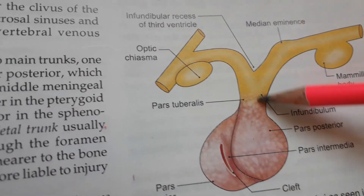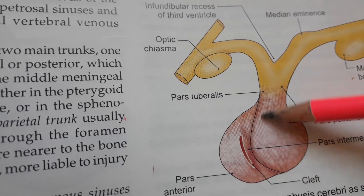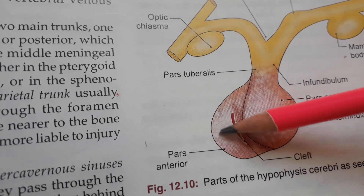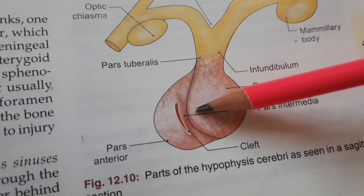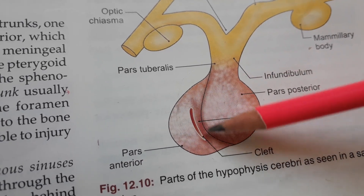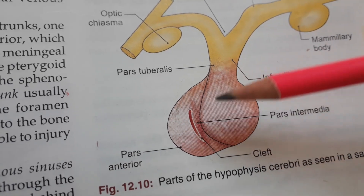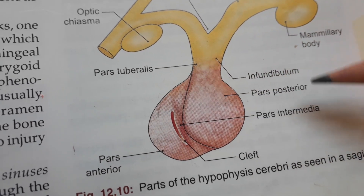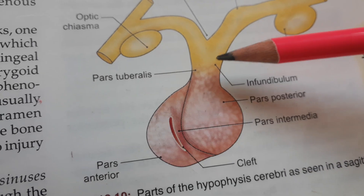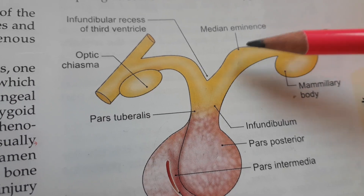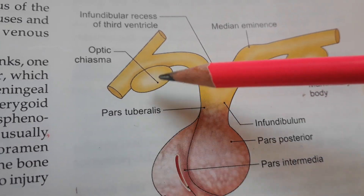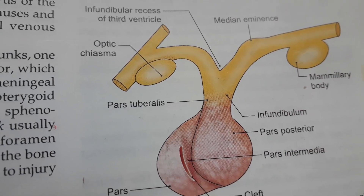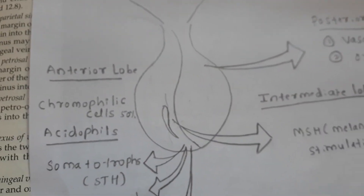The parts of the pituitary gland: it consists of the adenohypophysis, or anterior lobe, and the neurohypophysis, or posterior lobe. The adenohypophysis consists of the anterior lobe — also called pars anterior, which is the largest lobe — the pars intermedia, a small area separated from the anterior part by a cleft, and the pars tuberalis. The neurohypophysis consists of the posterior lobe (pars posterior), the infundibulum, and the median eminence. Superiorly it is related to the optic chiasma and the infundibular recess of the third ventricle.